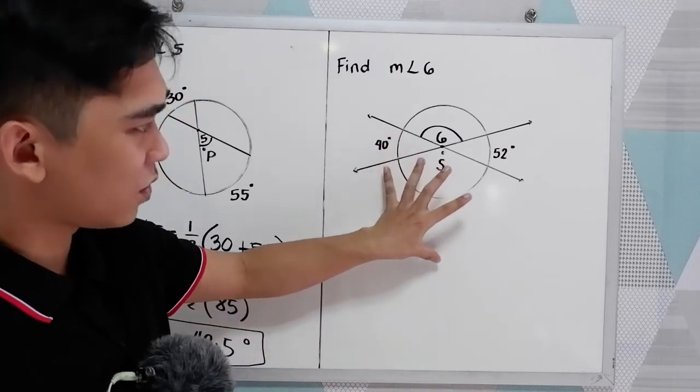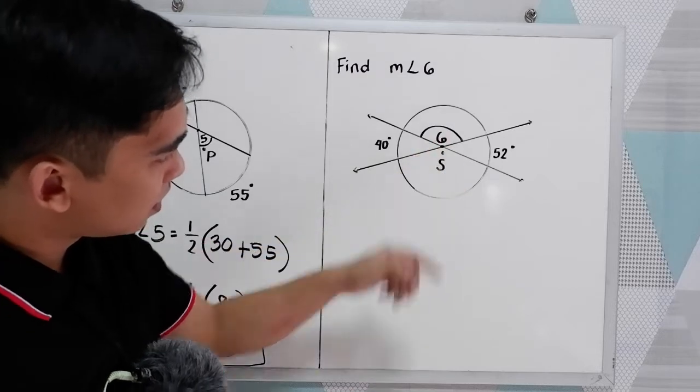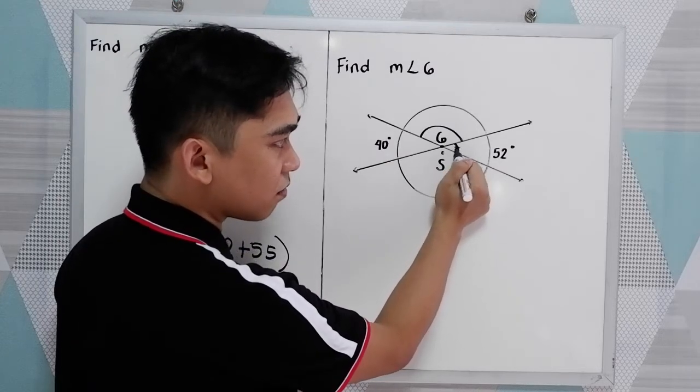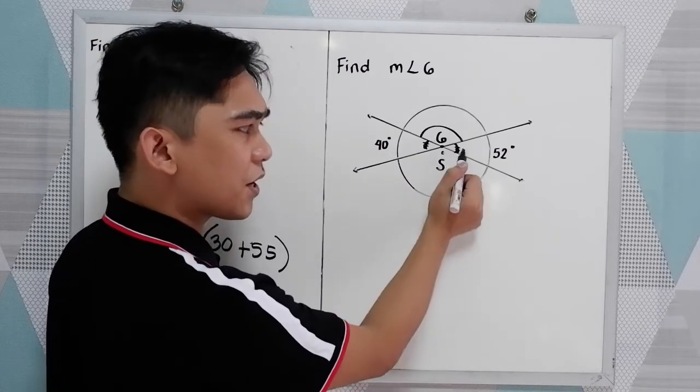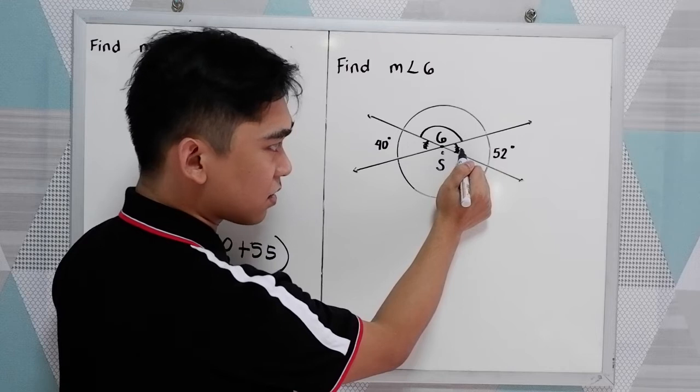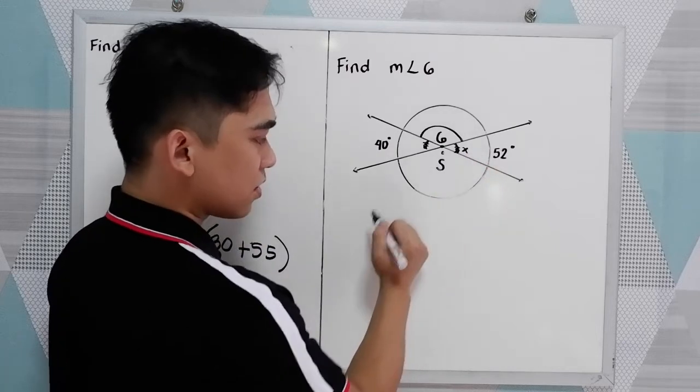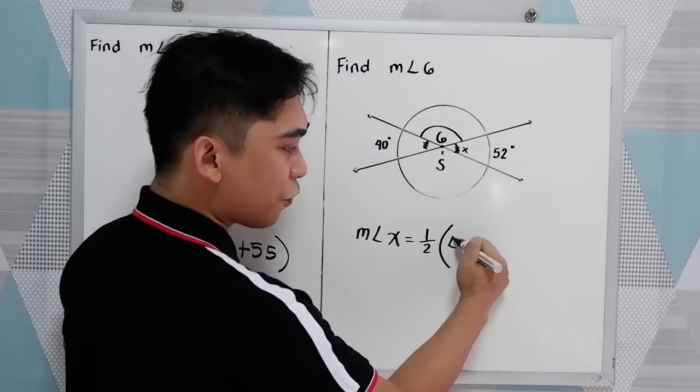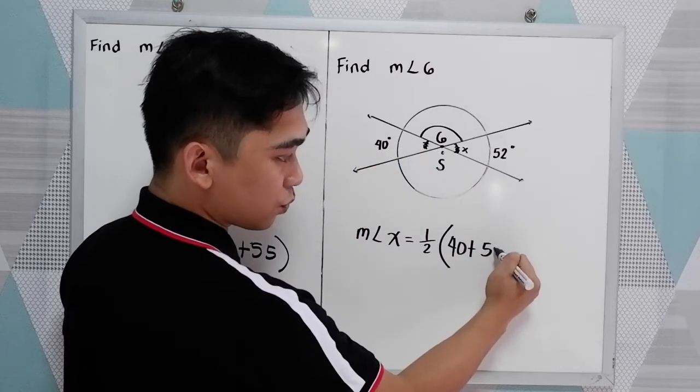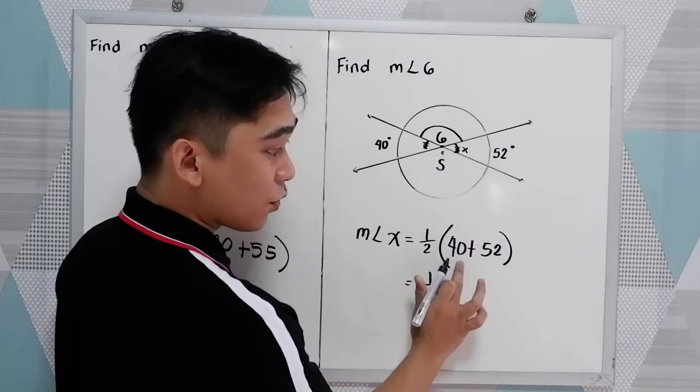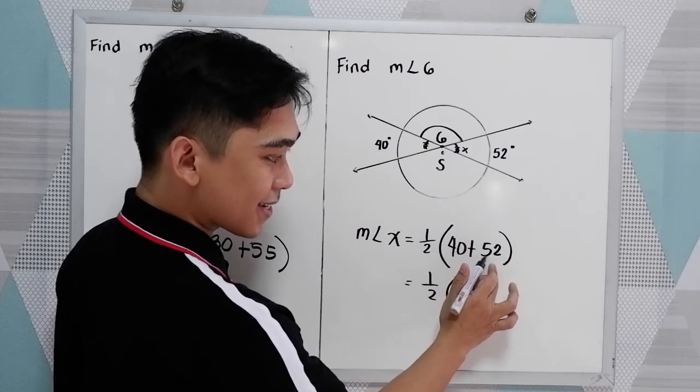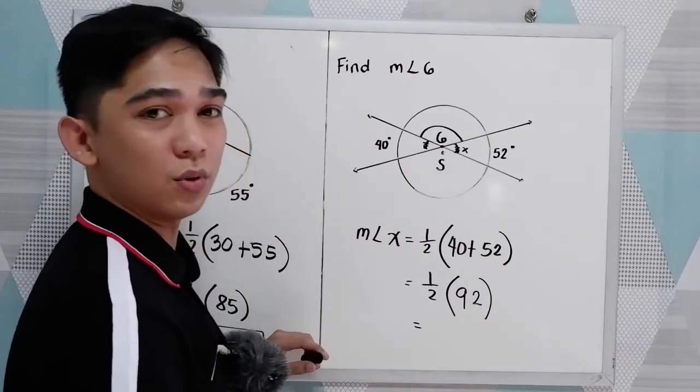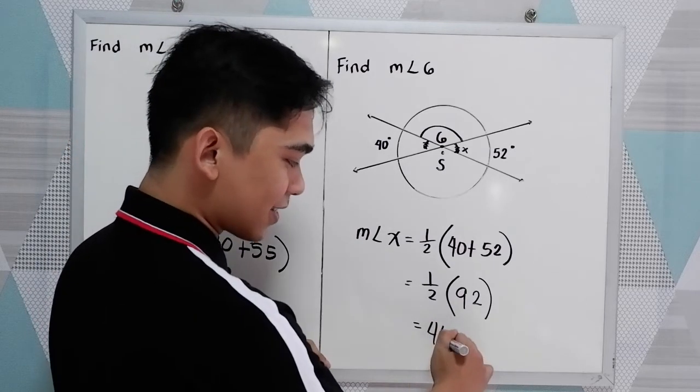So in our illustration, angle 6 is here. So in the given, we can get the measure of this angle. So let us first find the measure of this angle. Let's say, let us name it angle X. So measure of angle X, that is equal to one-half of the sum of 40 plus 52. One-half, 40 plus 52, that is 92. One-half of 92, or 92 divided by 2, that is 46 degrees.